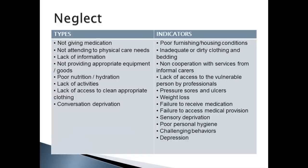Conversation deprivation is also a form of neglect. Indicators of neglect might include poor furnishing or housing conditions, inadequate or dirty clothing and bedding, non-cooperation with services from informal carers, lack of access to the vulnerable person by professionals, visible signs such as pressure sores and ulcers, weight loss, failure to receive medication, failure to access medical provision, and sensory deprivation.